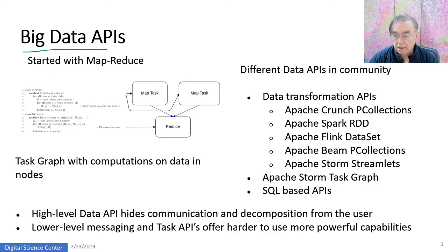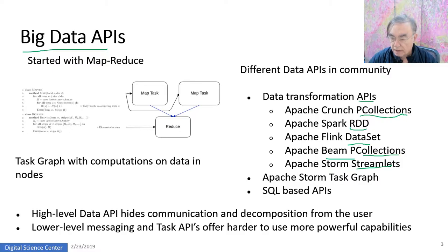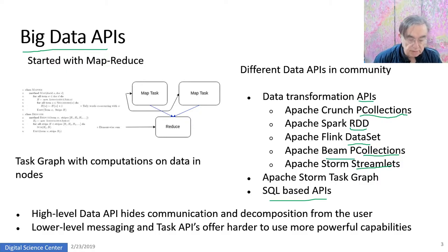Here we have different APIs on existing systems. We have pCollections and Apache Crunch, which is the original version that became Apache Beam. We have RDDs in Spark, which is currently a major implementation of Beam. We have Flink with datasets, and Stream that's in Storm. We also have to look at the task graph, which is in Storm and Spark, and SQL-based APIs. The higher-level data API hides communication and decomposition from the user, and if you want to customize that, you have to go to low-level messaging and task APIs.